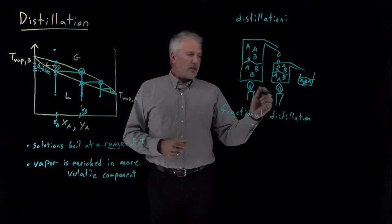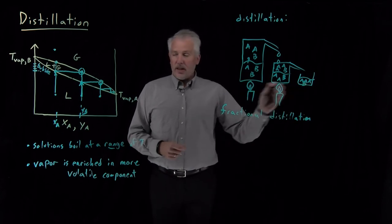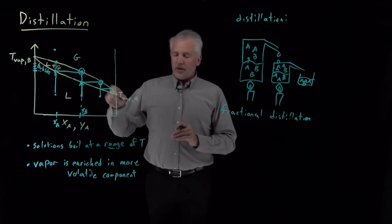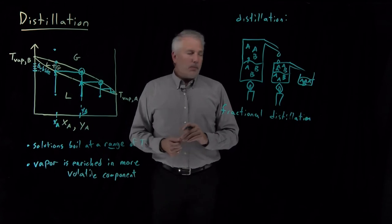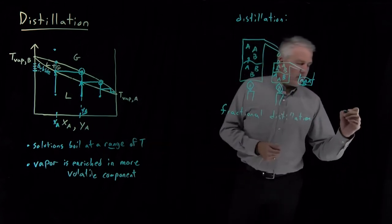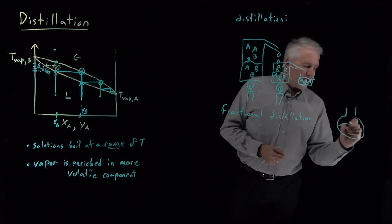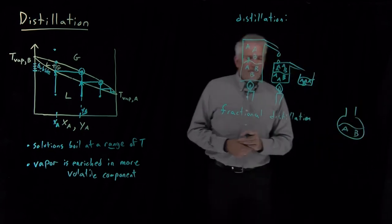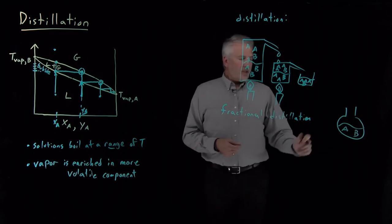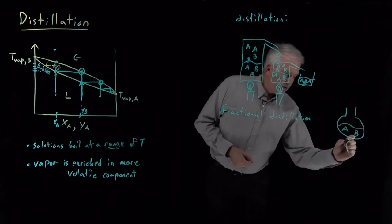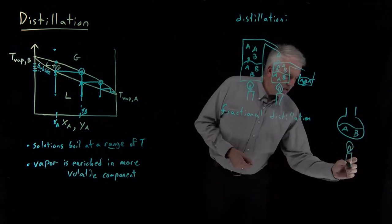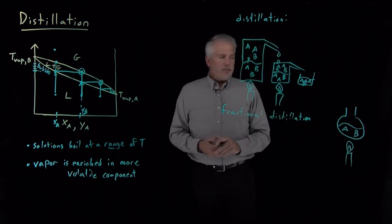It can happen not just in sequential steps, the way I've drawn it here, which is perhaps the easiest way to visualize it on this diagram, but you can in fact do this all in one container, all in one flask if you're in a laboratory. Imagine we've got a solution, which again we're going to boil, containing A and B.